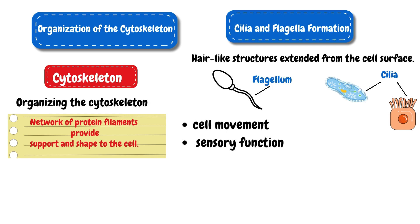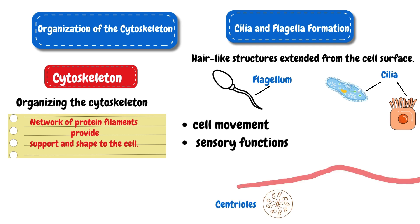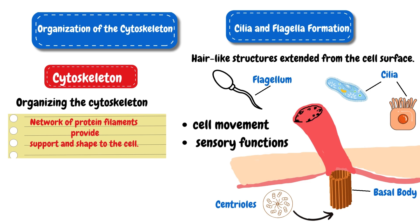When the cell needs to make cilia or flagella, centrioles move to the cell surface and act as starting points known as basal bodies for these hair-like structures. Once the centrioles are in position, the cell starts adding the materials needed to build the cilia or flagella, just like adding bricks to build a wall.